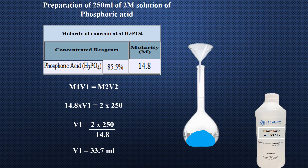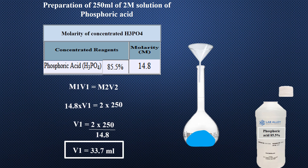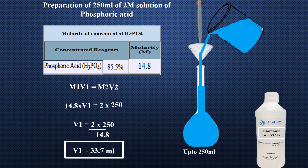To prepare 250 milliliters of 2 molar solution of phosphoric acid: M1 will be the same as in the previous calculations. V1 is to be found out. M2 will be 2, as we want to prepare a 2 molar solution. Put 250 in V2, as we want to prepare 250 milliliters of solution. Take 33.7 milliliters of concentrated phosphoric acid with a pipette into a 250 milliliter flask having a little water in it, and dilute the solution up to the mark. This gives 250 milliliters of 2 molar solution of phosphoric acid.